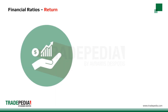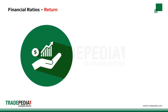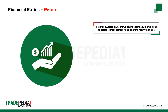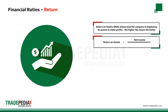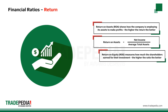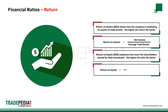Return ratios display the company's ability to generate profits. The return on assets ratio, also known as ROA, illustrates how well the company is employing its total assets to make profits — the higher the return, the better. It is calculated by dividing the net income of the firm over its total assets. Another profitability ratio is the return on equity ratio, or ROE, which measures how much the shareholders earned for their investment in this company. The higher the ratio, the better. Return on equity divides the net income by the shareholders' equity or contribution.